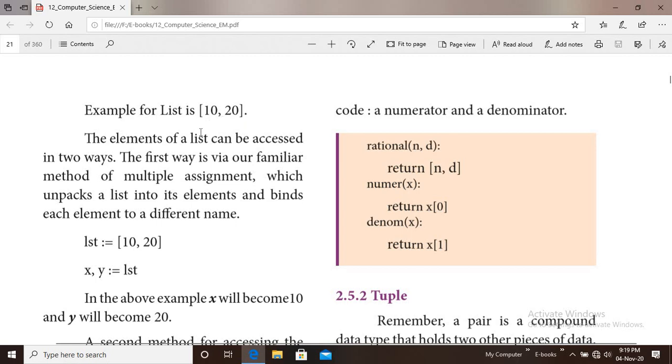The elements of a list can be accessed in two ways. The first way is through our familiar method of multiple assignment, which unpacks the list into elements and binds each element to a different name. The assignment method uses the equal operator.